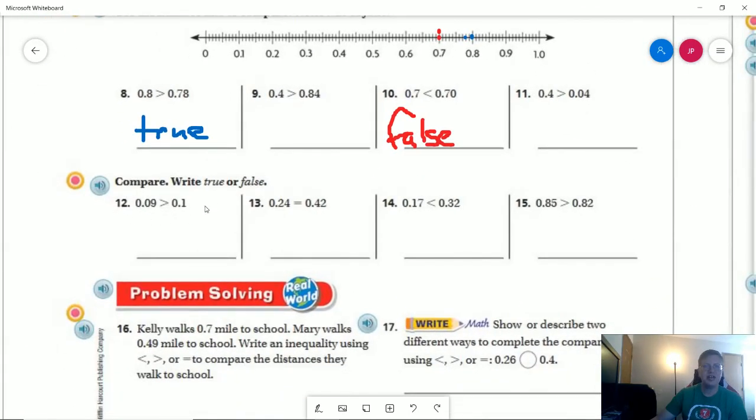Number twelve: we don't have to use the number line, but I'll change tenths to hundredths so we can compare. Nine hundredths is not greater than ten hundredths—it's one less. So this would be false.